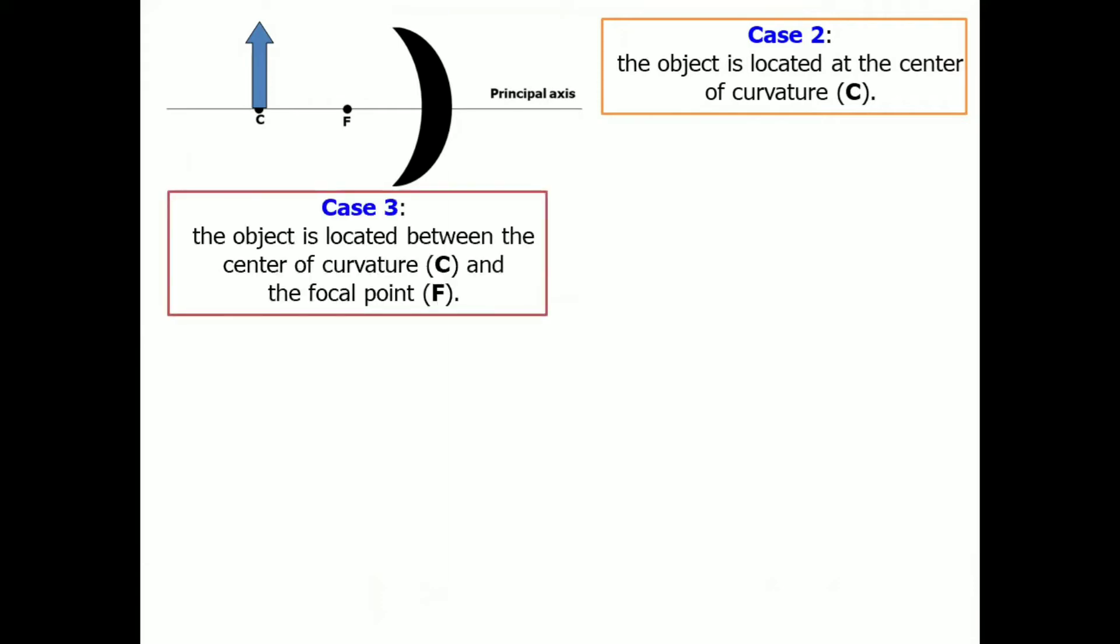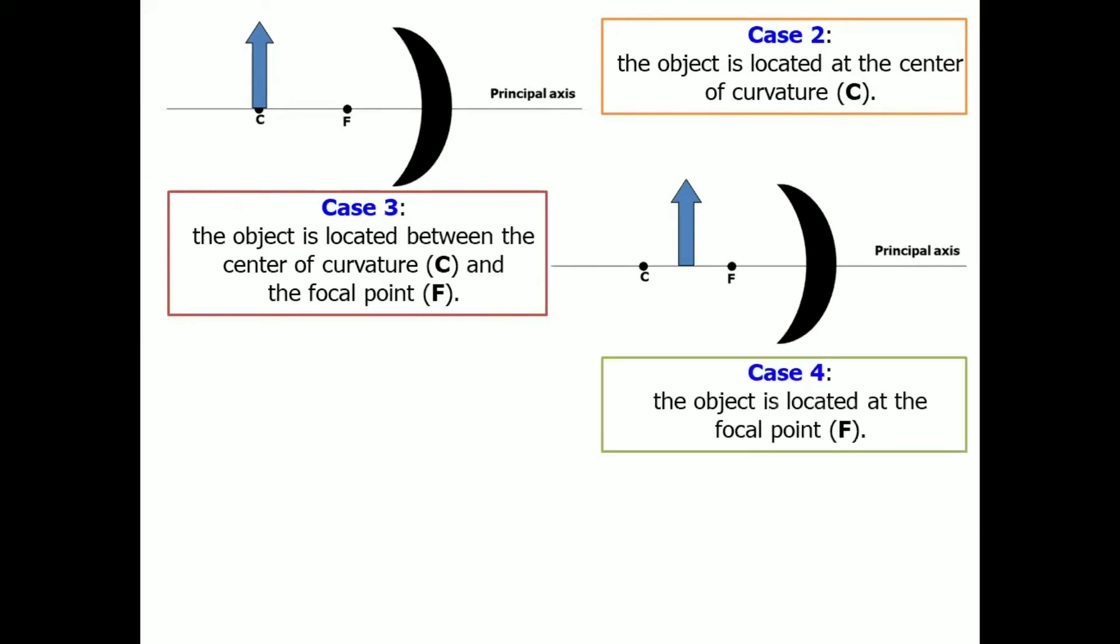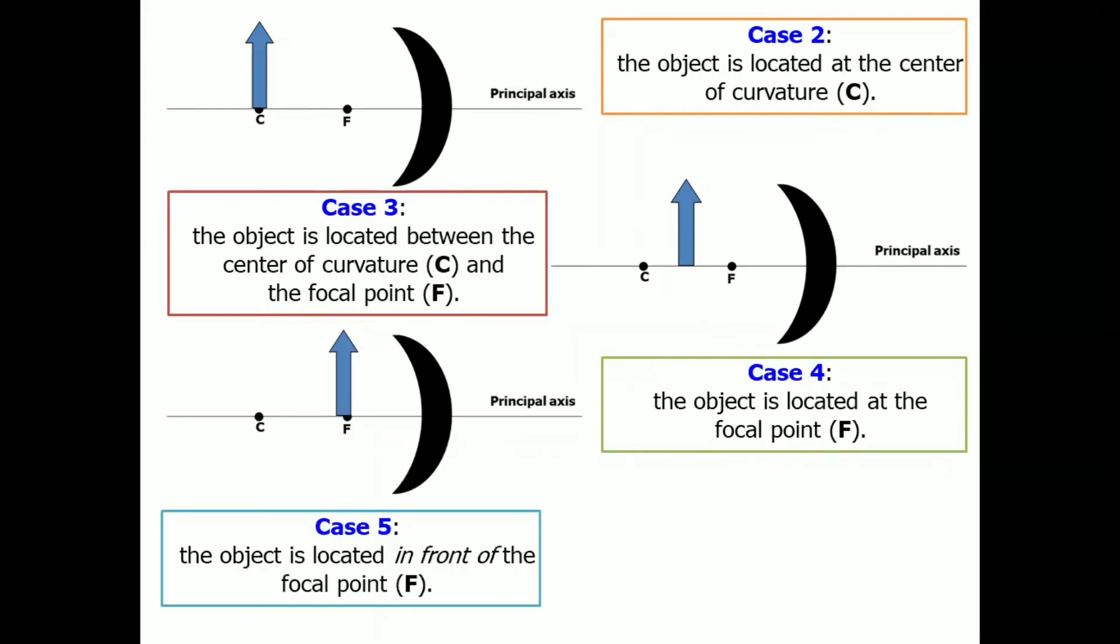For case number two, the object is located at the center of the curvature. So, therefore, you have to put the image at the center of curvature. Case number three, the object is located between the center of curvature and the focal point. And it appears like this. Case number four, the object is located at the focal point. Lastly, case number five, the object is located in front of the focal point. And it looks like this.